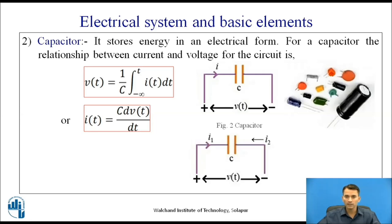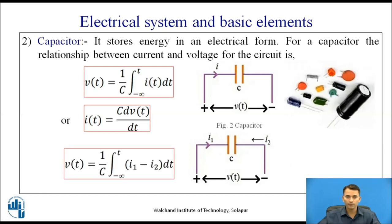For a circuit where two currents flow in opposite directions through the capacitor, the equation becomes V(t) = (1/C) ∫ from −∞ to t of (I1 − I2) dt, since I1 flows from the positive terminal and I2 flows from the negative terminal.